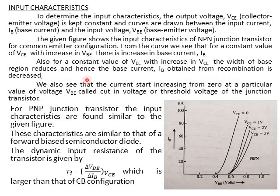So the base current value decreases. As VCE increases, base current keeps reducing for a particular VBE value. We also see that the current starts increasing from 0 at a particular value of voltage VBE, called the cut-in voltage or threshold voltage of the junction transistor.